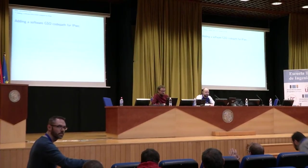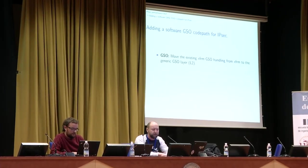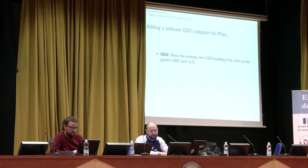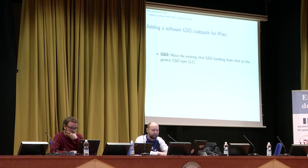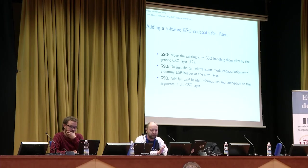Let's move on to the transmit path. We want to do GSO for IPsec too. We already have GSO for the transforms, but it happens really early at the transforms layer. What we want to do is move the existing GSO code path from the transforms layer to the generic GSO layer at layer 2 — so we keep the big packets in the stack longer and don't need to process each small packet. The idea is to do the tunnel or transport mode encapsulation at the transport layer, add a dummy ESP header marking the packet as ESP, push the big unencrypted packet down the stack, and at the GSO layer add full ESP header information and do the encryption on the segments.